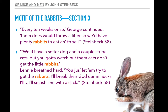Still in section three, George continues: 'Every ten weeks or so them does would throw a litter, so we'd have plenty of rabbits to eat and to sell.' So rabbits represent Lenny's hopeful dream of having their own home, while George sees them practically — to eat and sell. A little later: 'We'd have a setter dog and a couple of striped cats, but you got to watch out them cats don't get the little rabbits.' Lenny breathes hard: 'You just let them try to get the rabbits. I'll break their goddamn neck. I'll smash them with a stick.' This is symbolic of having a dream and people trying to steal it away — like the cat getting the rabbits.